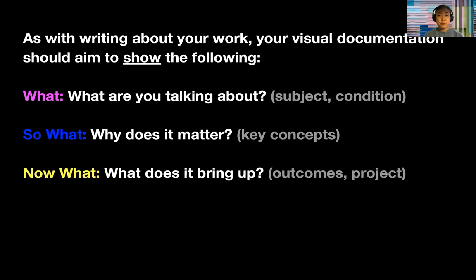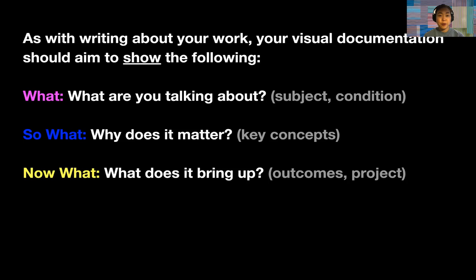Chapter one: documentation goals. Last week when we talked about how to write about your work, there was a lot of discussion on the what, the so what, and the now what of your project. This idea remains true for visual documentation as well. Visual documentation should be succinct and have a clear sense of purpose. Your thesis documentation should show the what — the subject or condition you're exploring — the so what, why your project matters, and the now what: what concepts led to what outcome, showing a clear line from the concepts you identified.